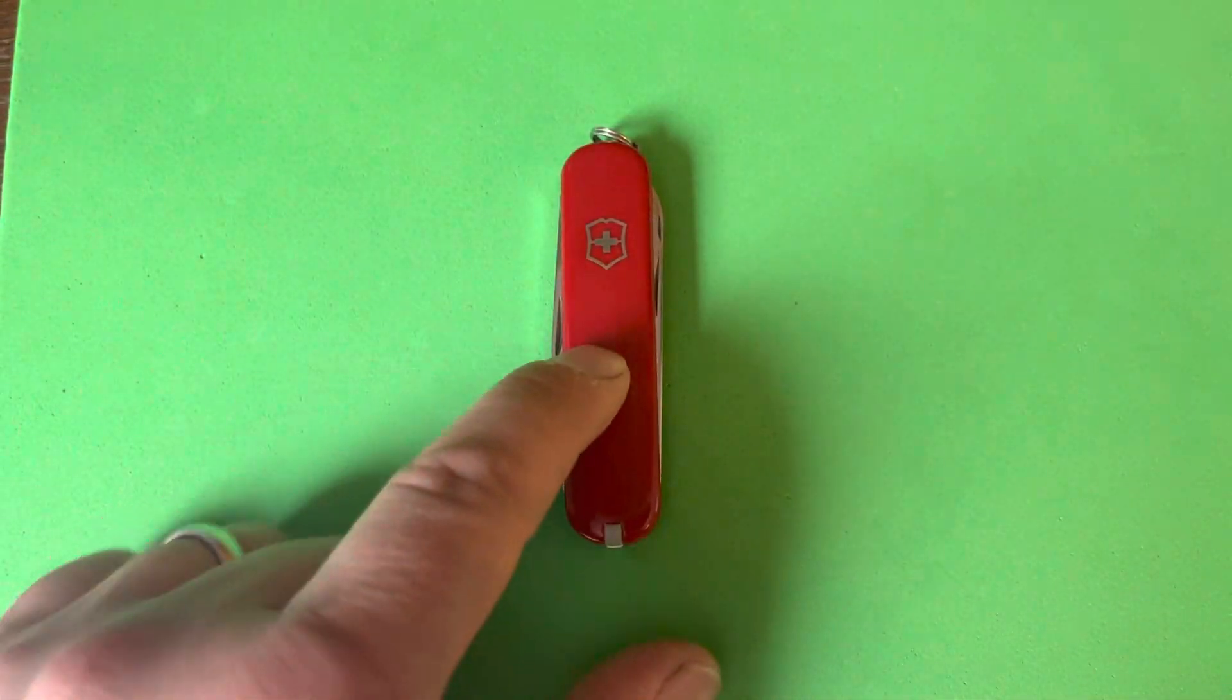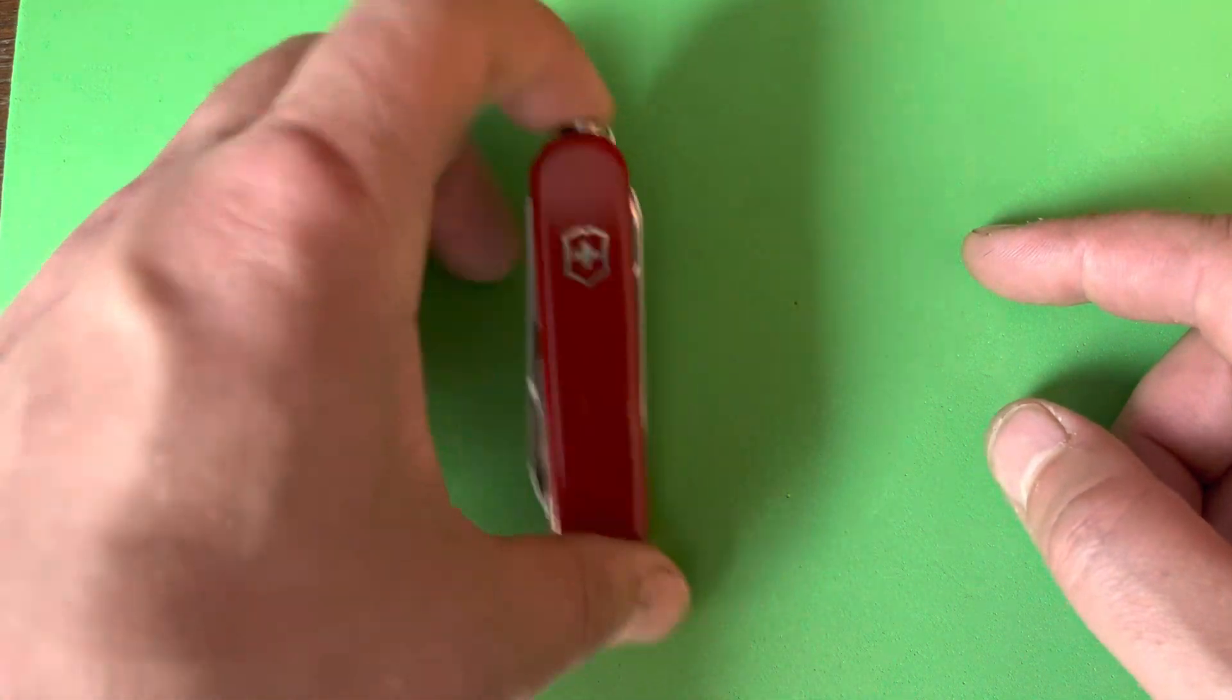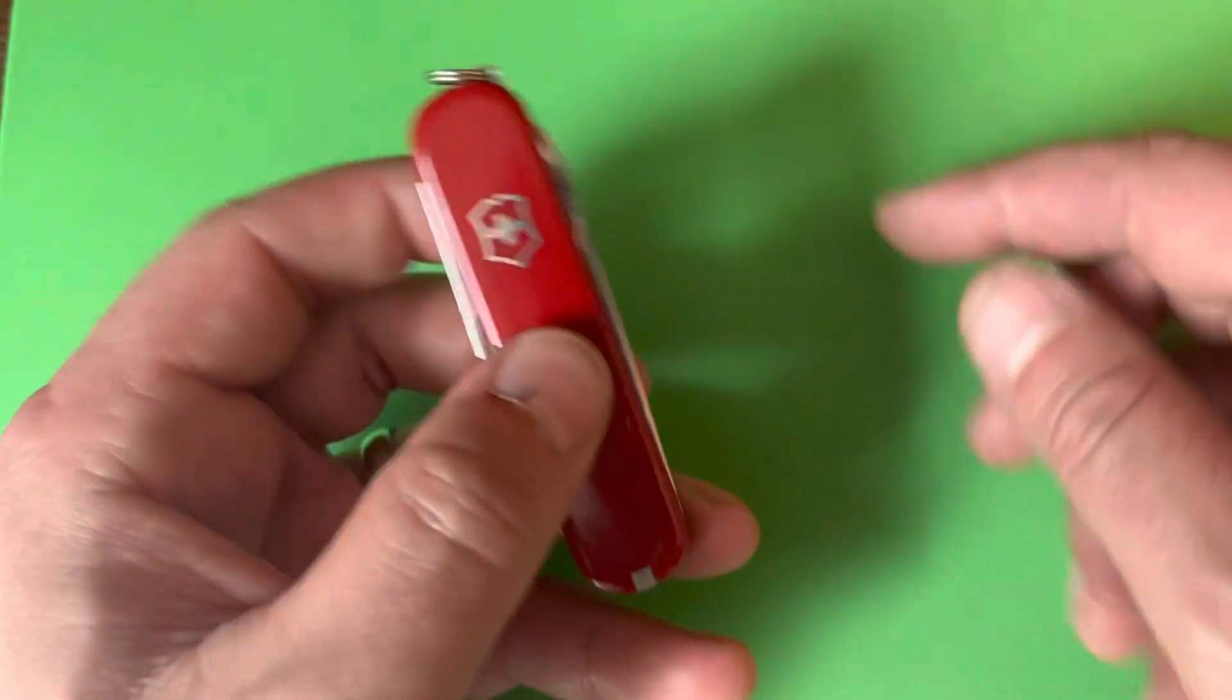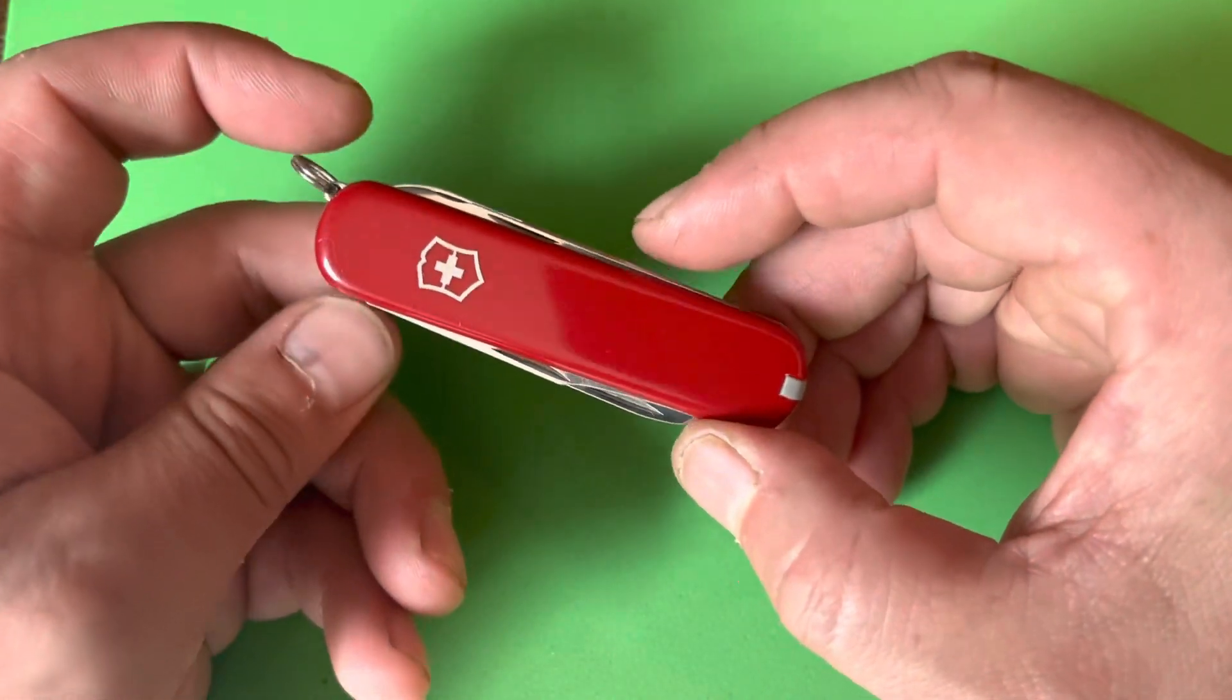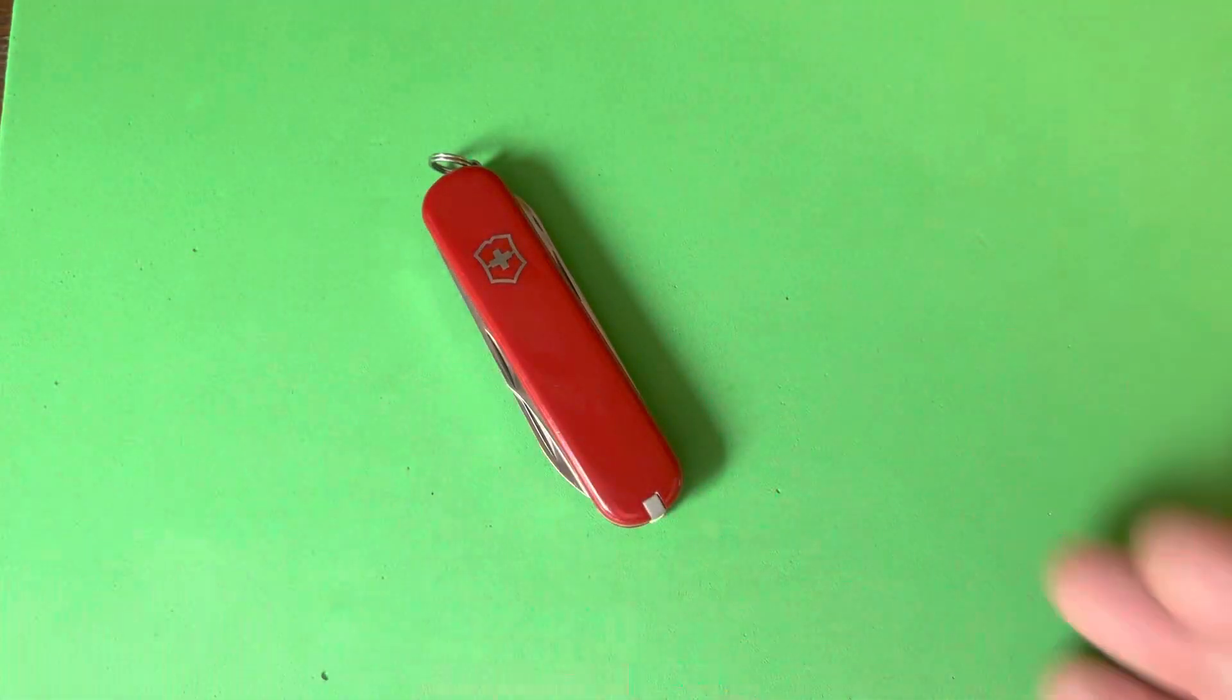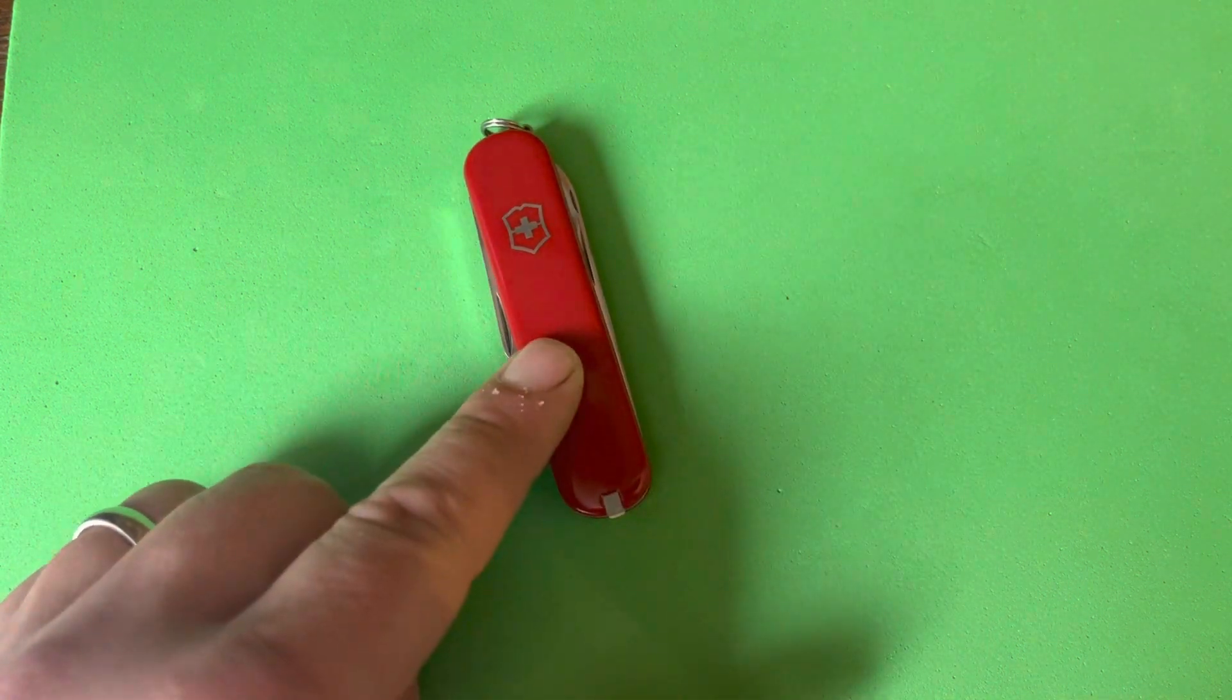This is a 74 millimeter Victorinox. They discontinued the whole 74 millimeter line in 2020, so no more 74s are being made. They've been out of production for close to three years now, so these are getting harder and harder to find for decent prices. Collectors are snatching them up and selling them on secondary markets, raising the price.